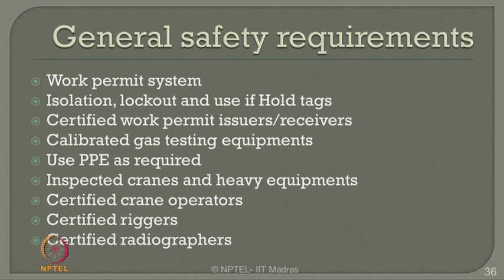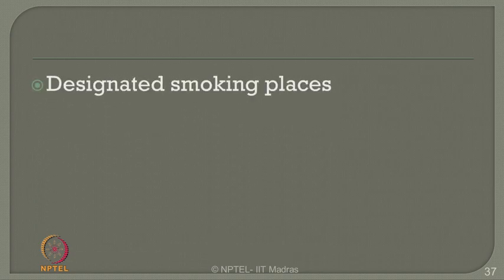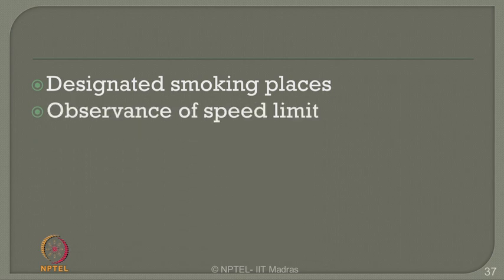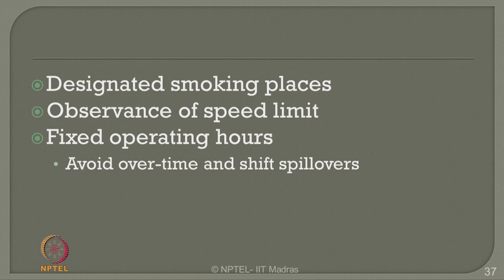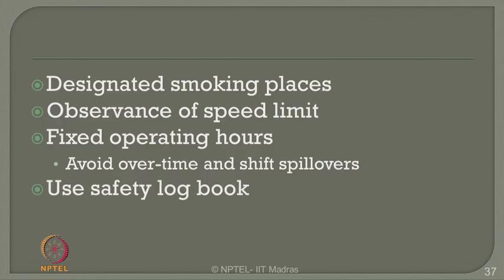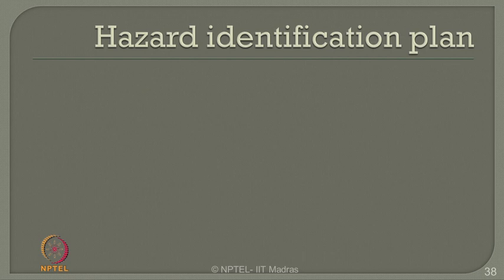Most importantly, encourage a practice of good housekeeping, as this can prevent many accidents and major disasters. You must designate smoking places clearly, observe speed limits within the plant, and maintain fixed operating hours. Kindly try to avoid overtime and shift spillovers, because work fatigue to people results in major accidents. Use a safety log book and maintain it under the custody of the plant safety engineer. You must also prepare a Hazard Identification Plan (HIP), which is a very important component of process safety management.